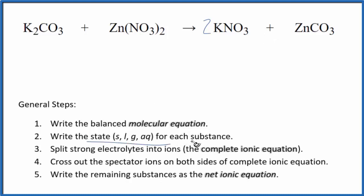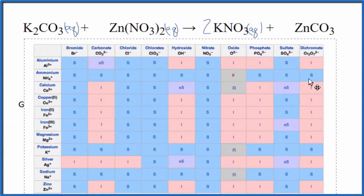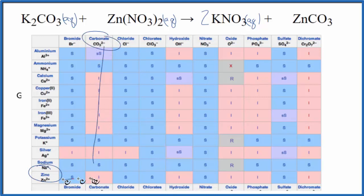Next, we need to write the states for each substance in our net ionic equation. Potassium compounds are very soluble — put an AQ. Nitrate compounds are also soluble, so zinc nitrate and potassium nitrate will be soluble. Let's take a closer look at our zinc carbonate. Often when we have carbonates, they're not soluble. Looking at a solubility table, we find zinc and carbonate — that means it's insoluble. So zinc carbonate is going to be a precipitate in this reaction; it's not soluble, so we write S for solid.